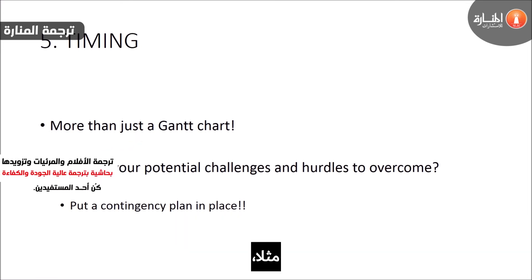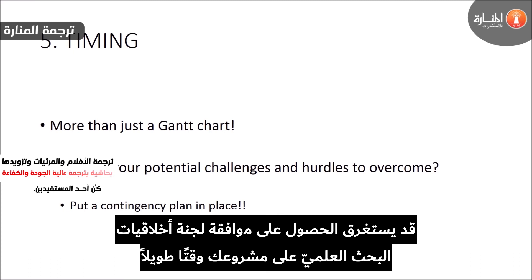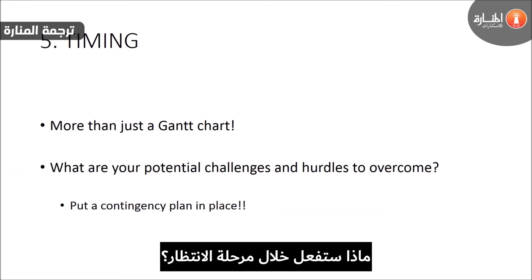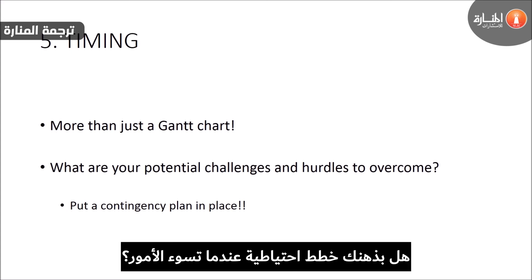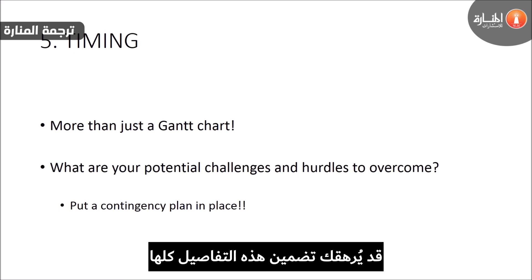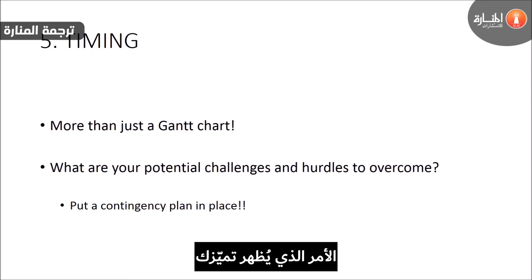For example, is obtaining ethical approval for your project likely to take a long time? If so, what will you be doing while waiting for this to come through? Do you have any contingency plans for when things go wrong — which, inevitably throughout the course of a PhD, they will? Including this level of detail might seem like overkill, but it will really make you look methodical in your planning and you'll stand out as a result.